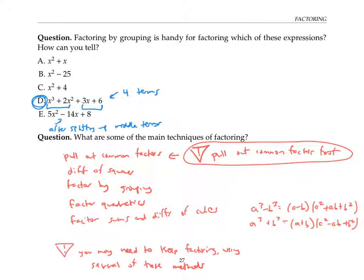For example, you might have to first pull out a common factor, then factor a difference of squares. And then you might notice that one of your factors is itself a difference of squares and you have to apply a difference of squares again. So don't stop when you factor a little bit, keep factoring as far as you can go.